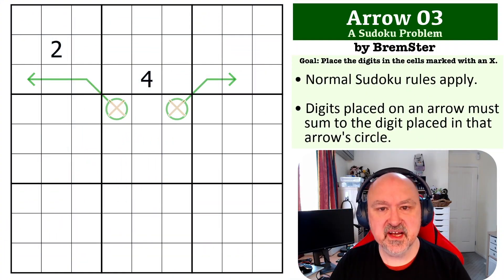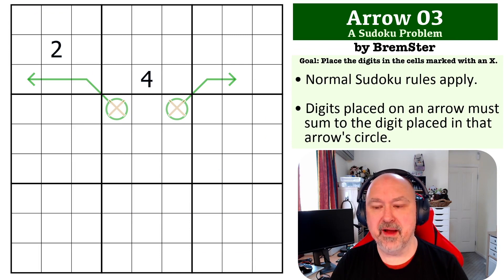Hey, this is Bremster and this is the next problem in my Sudoku problem series. This is Arrow Problem number three. I really should possibly look at redoing how I do the names of these problems because this is going to get unwieldy really quickly, but we'll see how it goes.